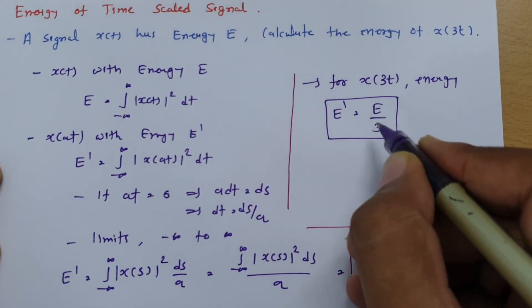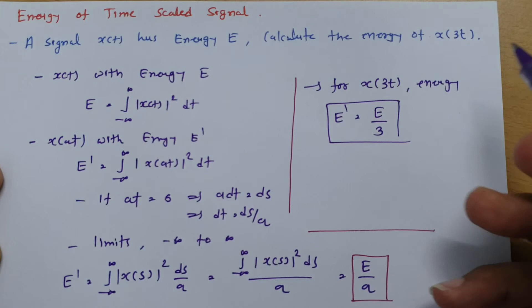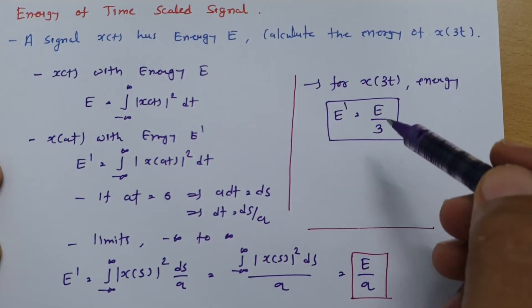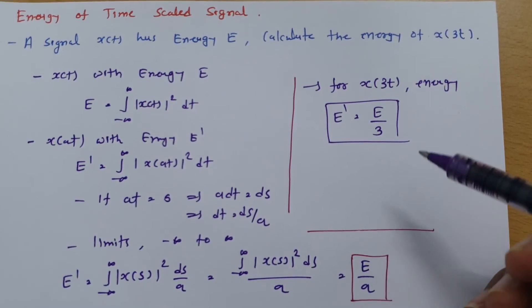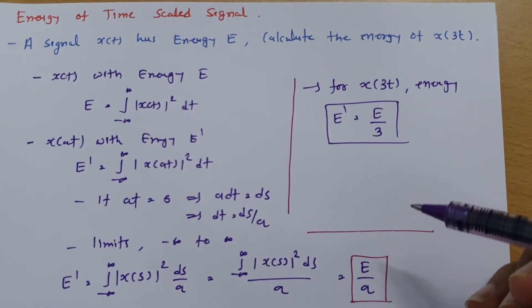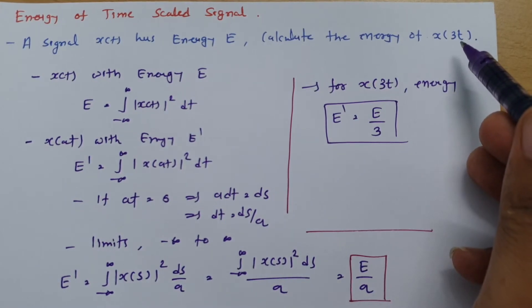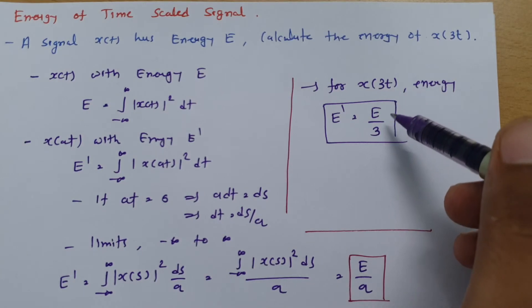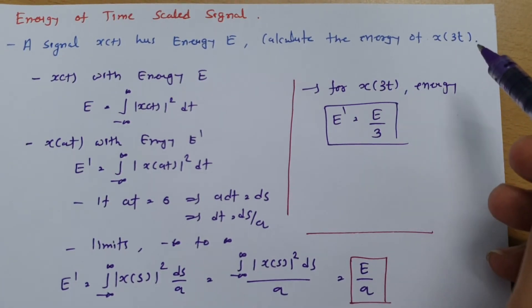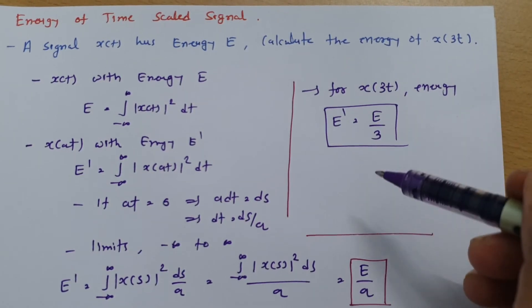So this is the energy which we have for x(3t). This is a very important shortcut that one should know for energy of time scaled signal. Directly one can say if you have time scaling by t by 2, in that case you should multiply that 2 with energy. But if you multiply time with scaling factor a, in that case it will be E by a.